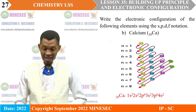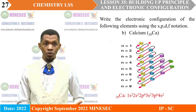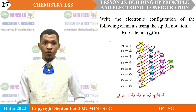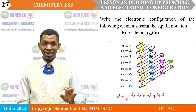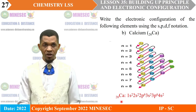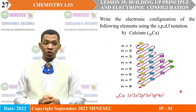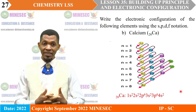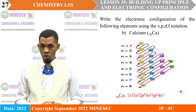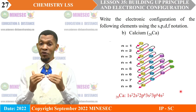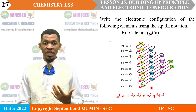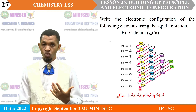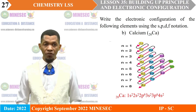B. Calcium (20 electrons). Using the same order, we fill 1s, 2s, 2p, 3s, 3p, then 4s, until the 20 electrons of calcium are used up. The electronic configuration of calcium is 1s², 2s², 2p⁶, 3s², 3p⁶, 4s². Adding the powers: 2 plus 2 is 4, plus 6 is 10, plus 2 is 12, plus 6 is 18, plus 2 is 20. The electronic configuration of calcium is correct.